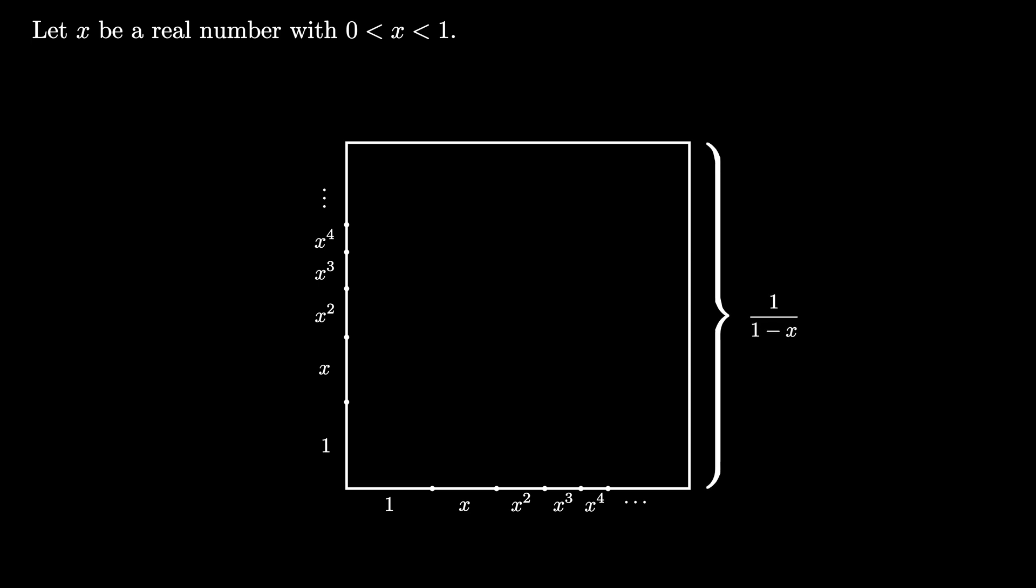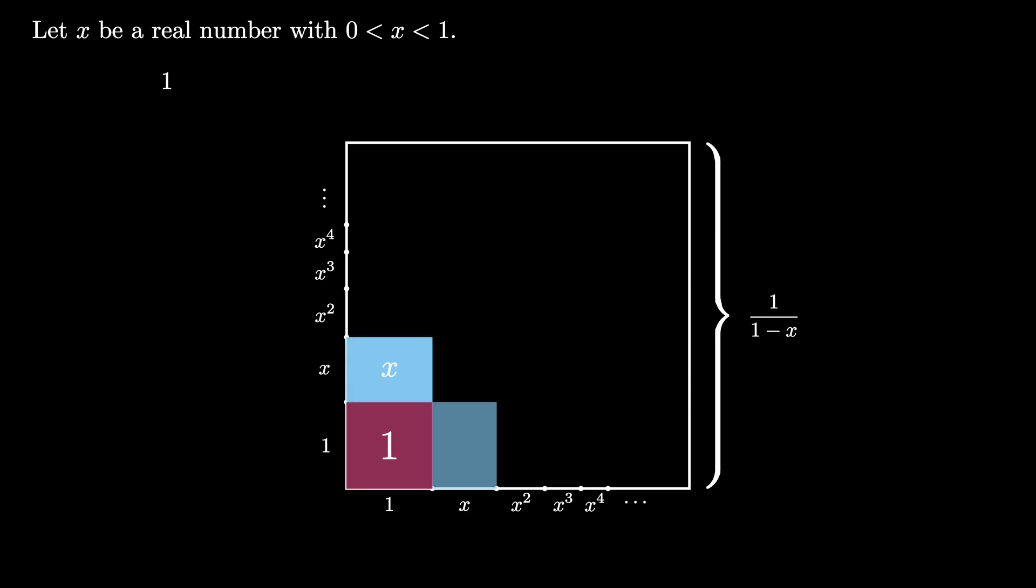Now we can use the labeled side lengths to decompose the square into a bunch of rectangles. First in the lower left corner we have a 1 by 1 square with area 1. Next to that we have two x by 1 rectangles both containing area x, so together they enclose an area of 2x.